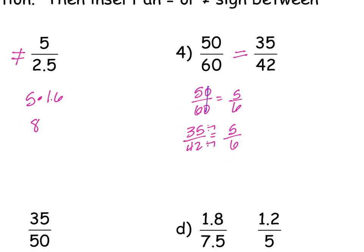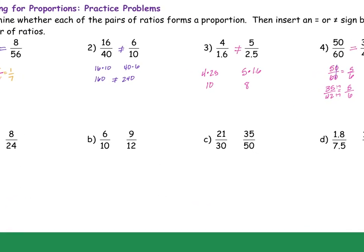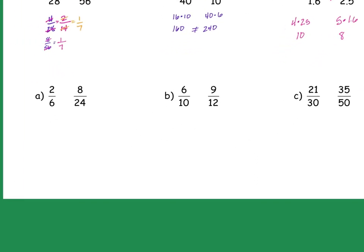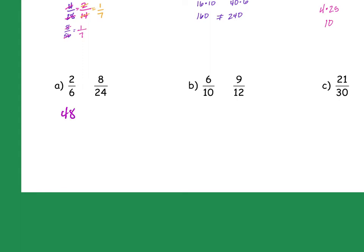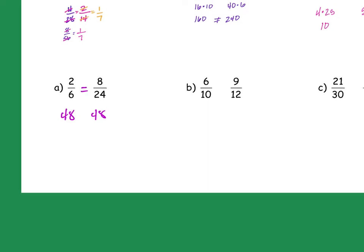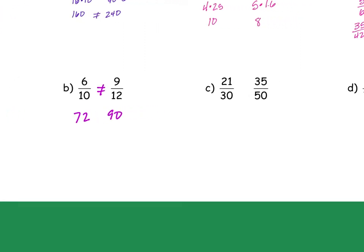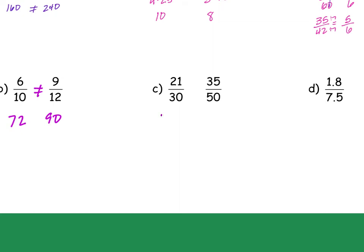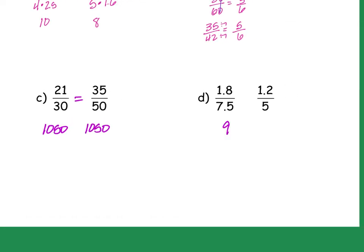So you're going to choose which one you like to do. There's four problems up here. I just did the cross multiplication on all of these because I just thought it was a little easier. This was 48 and 48, so 2 times 24 is 48 and 6 times 8 is 48, so this one happened to be equal. Part B was 72 and 90, so that one is not equal. C was 1,050 and 1,050, so that was also equal. And D, I got 9. 1.8 times 5 is 9, and 7.5 times 1.2 is 9, so that was also equal.